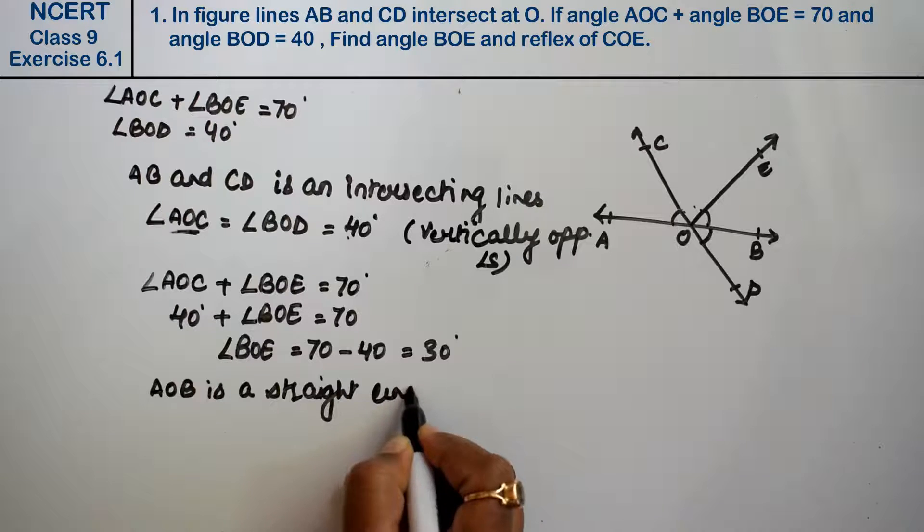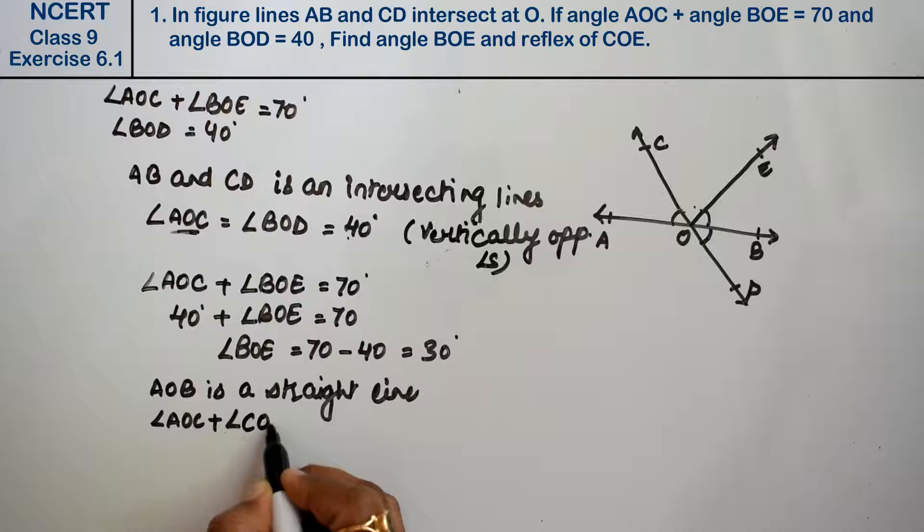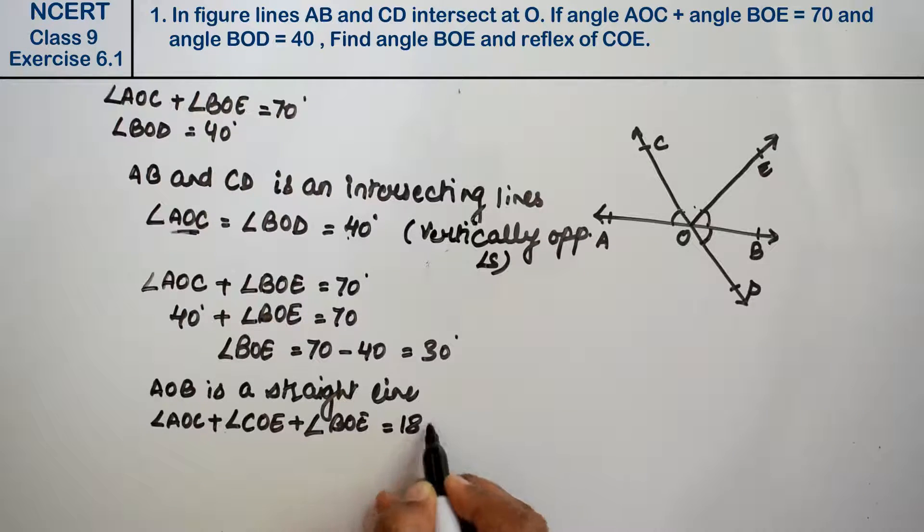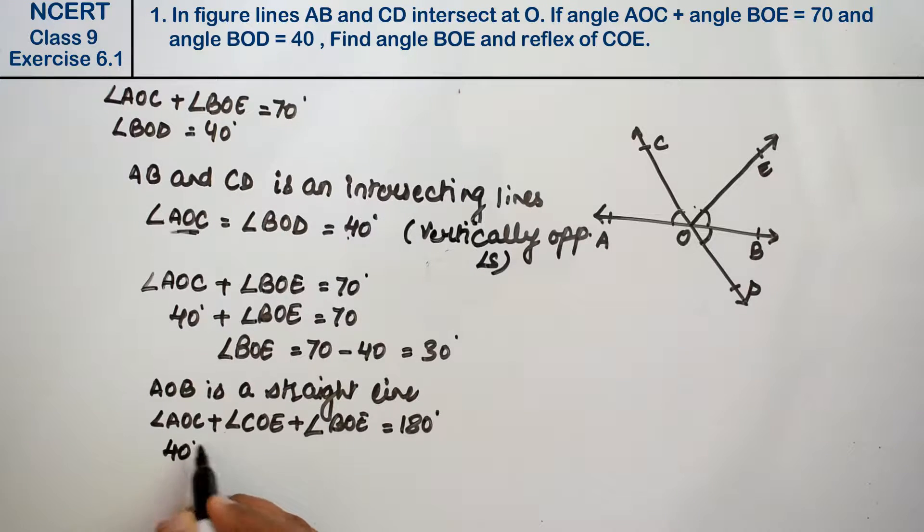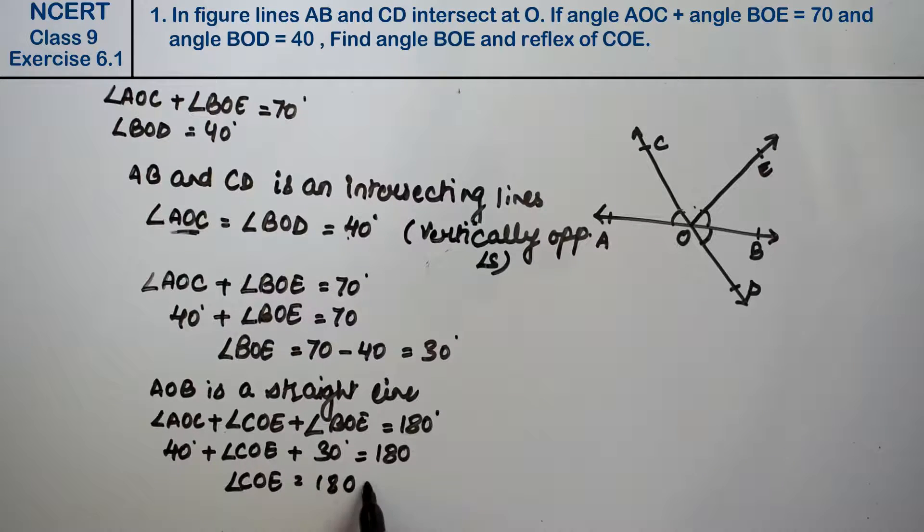On straight line AOB, angle AOC plus angle COE plus angle BOE equals 180 degrees. So 40 plus COE plus 30 equals 180. Therefore angle COE equals 180 minus 70, which is 110 degrees.